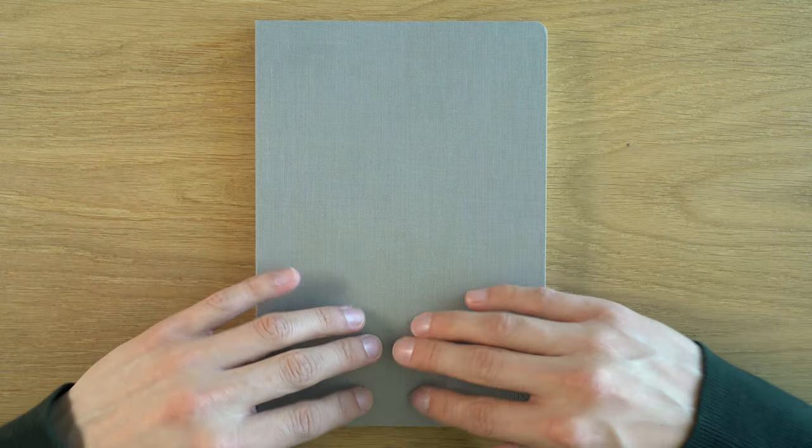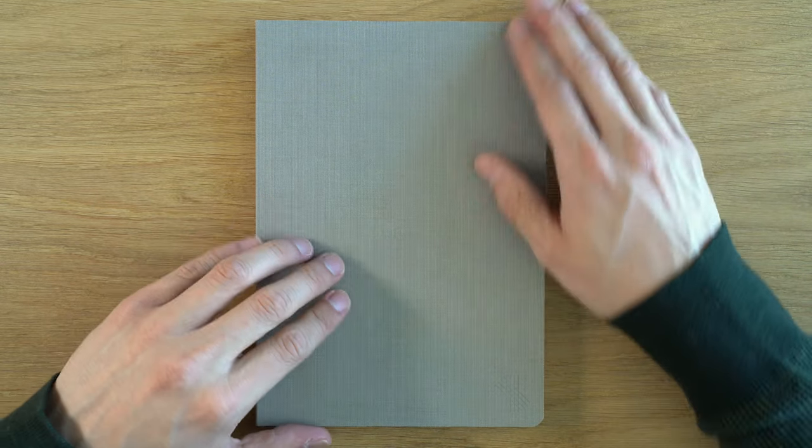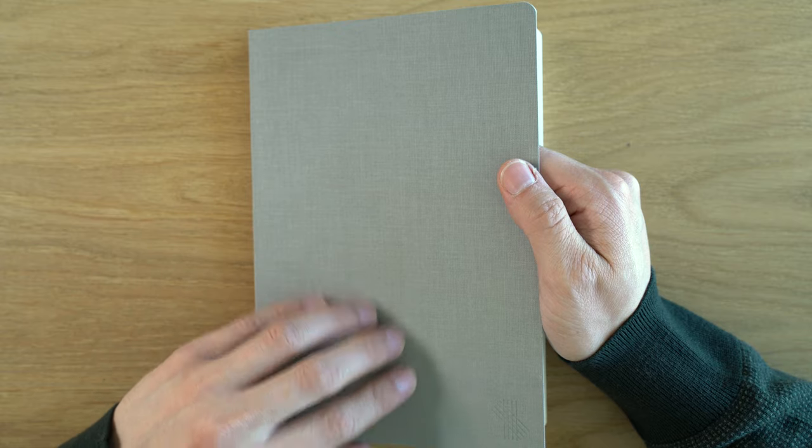Now in terms of specs, these only come in A5. They have this gray book binding linen cover. I don't know if this is real linen. If it is, it's definitely coated. It has a coating to it.